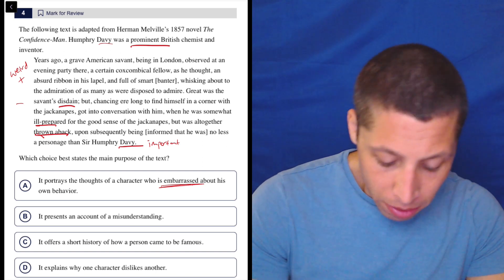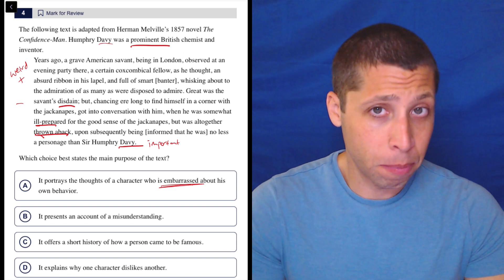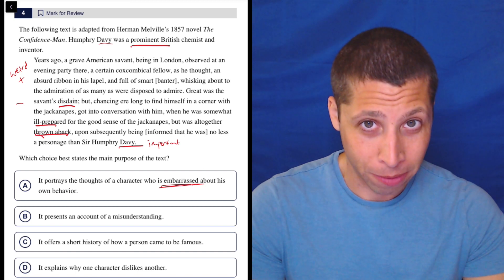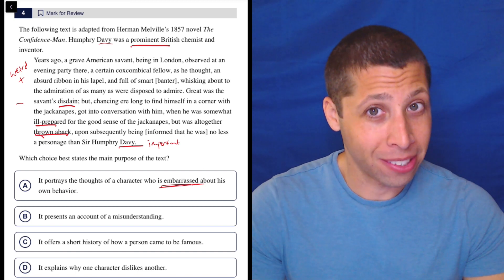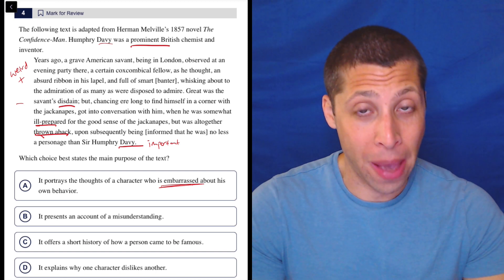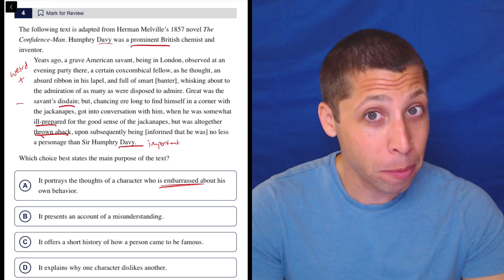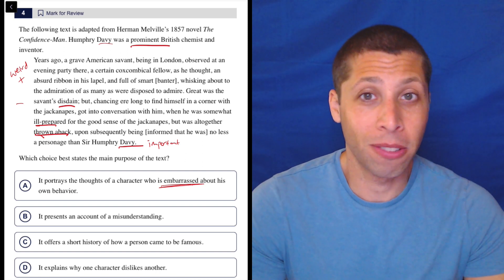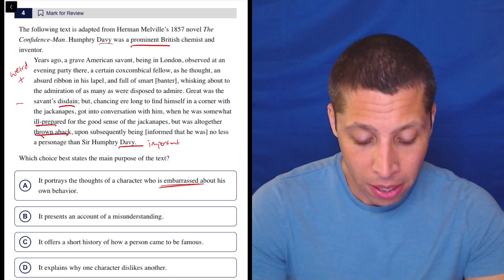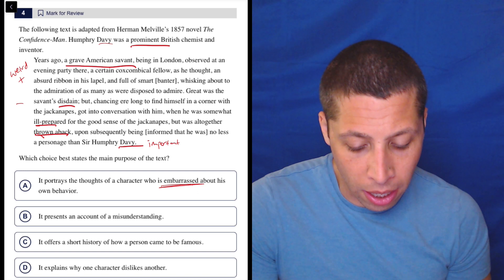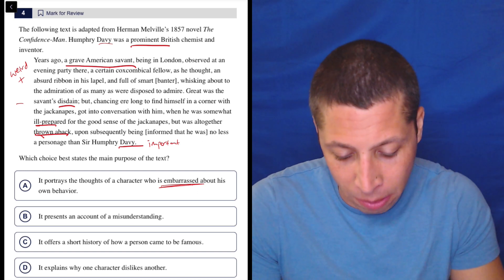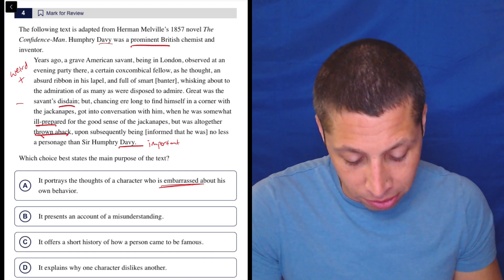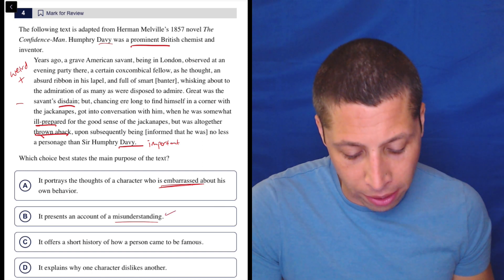Let's look at B. It presents an account of a misunderstanding. Well, what is this misunderstanding? The misunderstanding is that he was talking to someone who actually ended up being a very important person. Notice how that's a lot easier for me to slide in there, right? Like that part I do get from the passage and it doesn't say that he was embarrassed about the misunderstanding. It doesn't say that he was proud of it or any emotion about it at all. It's just a misunderstanding. I thought I was talking to some grave American savant, or actually I guess that's not, that's even someone else. I don't even know what's going on. So yeah, a misunderstanding is someone confused someone else. We'll come back to that, but here I feel like I can justify this word.